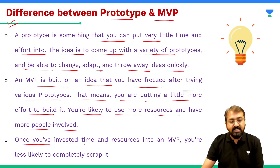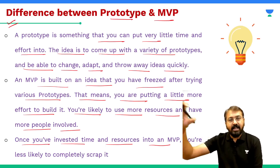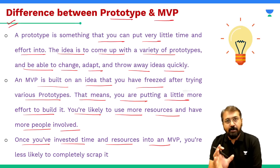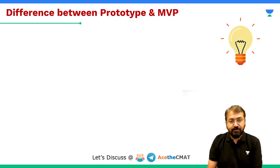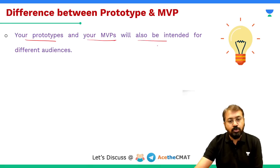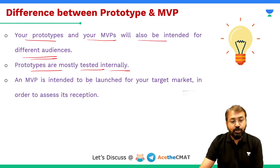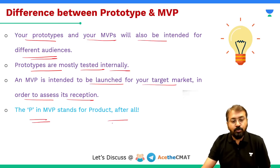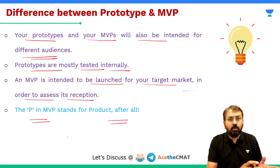Once you have invested time and resources into an MVP, you are less likely to completely scrap it — unlike a prototype which you might scrap and recreate freely. Prototypes and MVPs are also intended for different audiences: prototypes are mostly tested internally, while an MVP is intended to be launched for your target market in order to assess its reception. As the 'P' in MVP stands for product, you launch it for early-stage customers, get feedback, and then decide what features to add or remove.